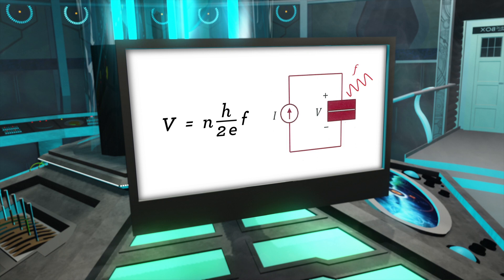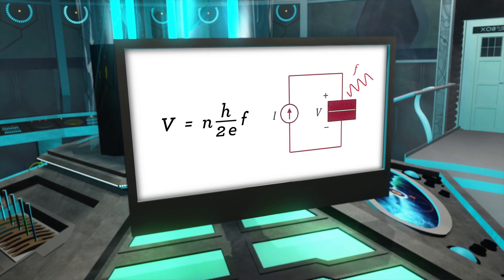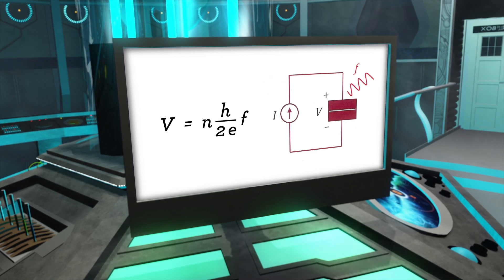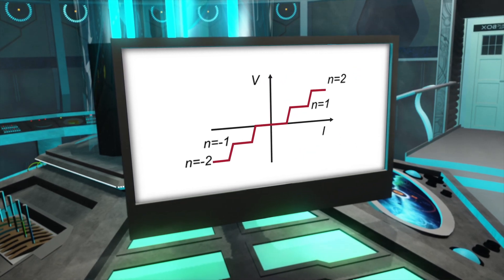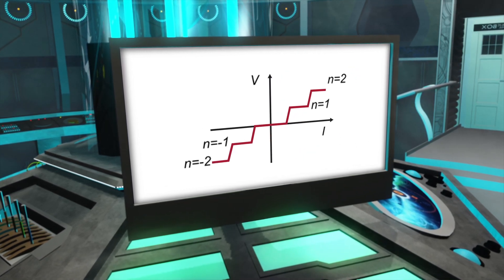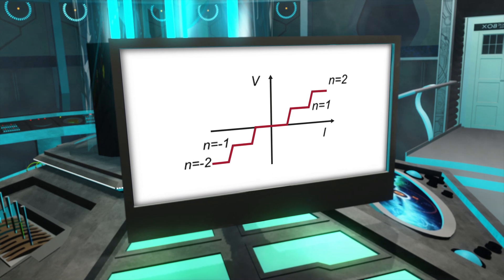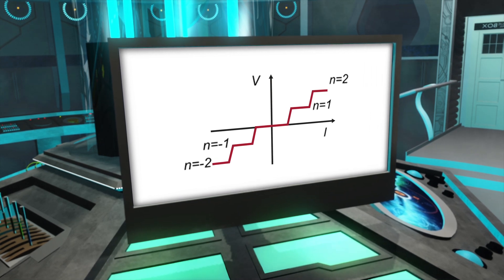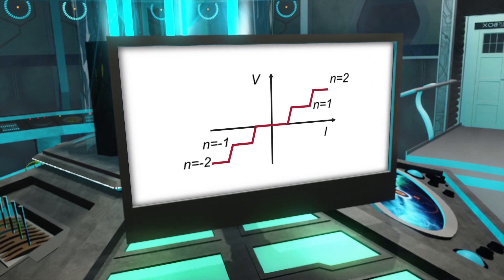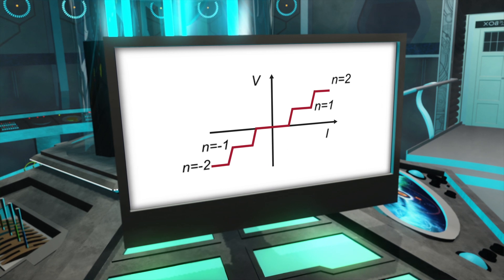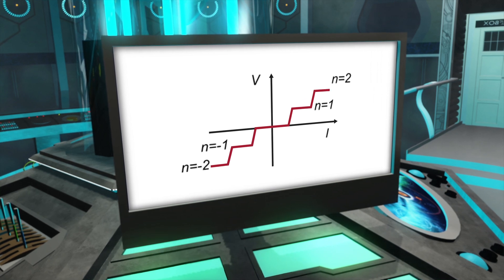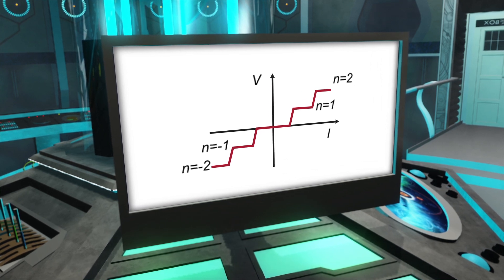It turns out that under just the right conditions, voltage and resistance are quantized. They have a kind of ruler of fixed steps, where the step size is set by fundamental constants and is always the same.